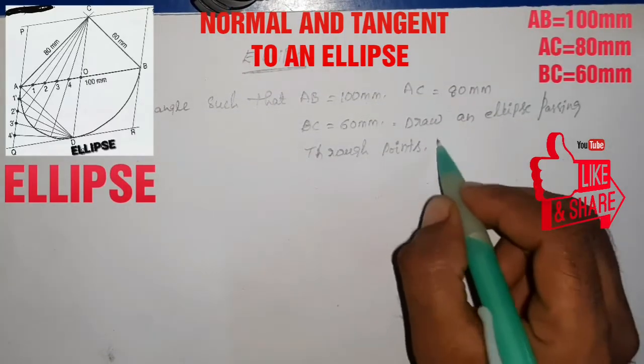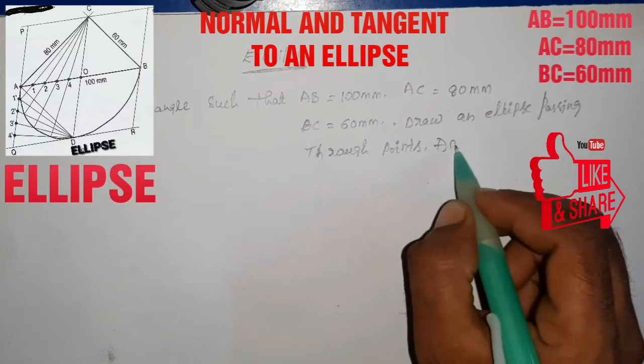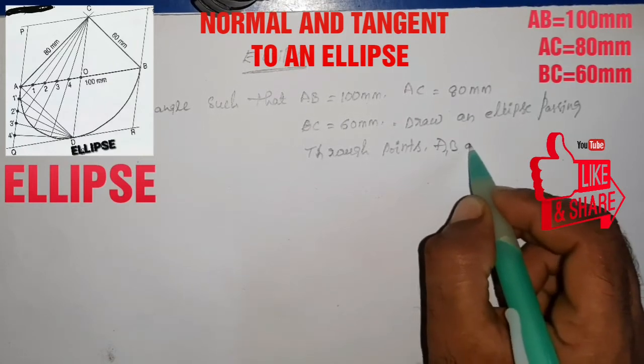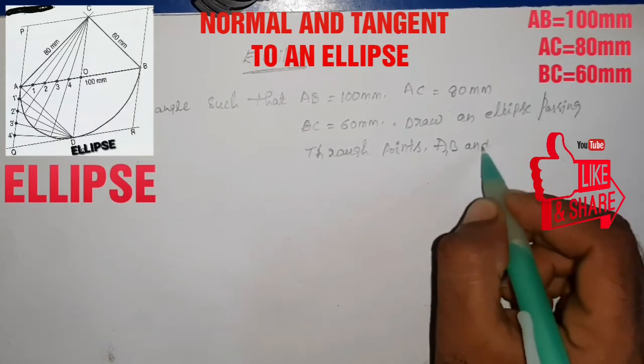We will draw an ellipse passing through points A, B, and C.